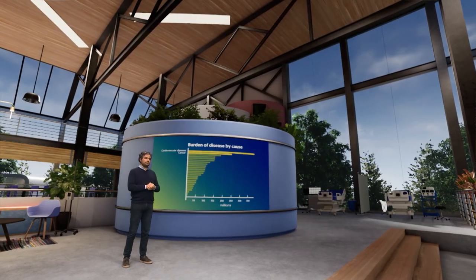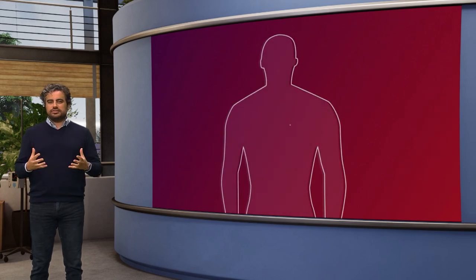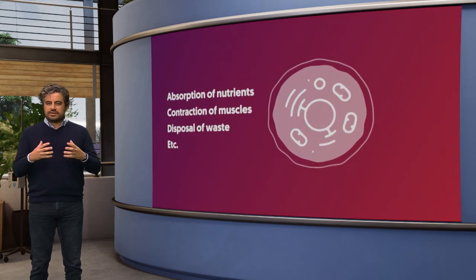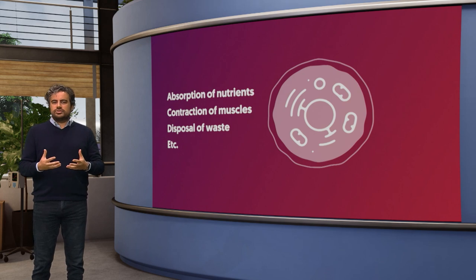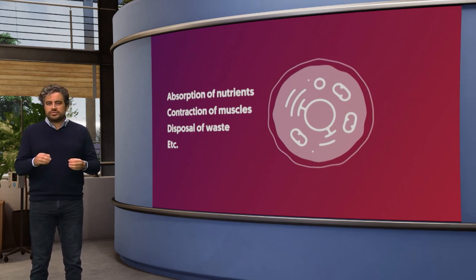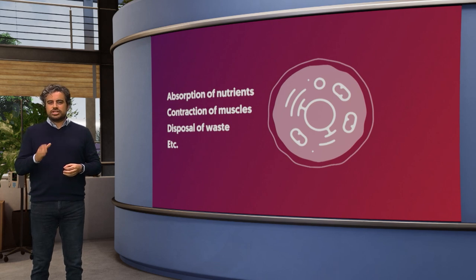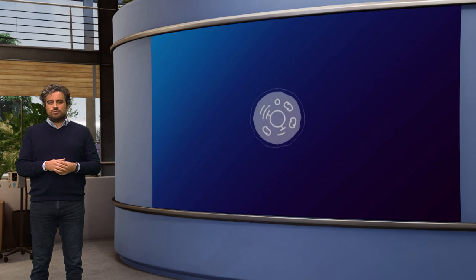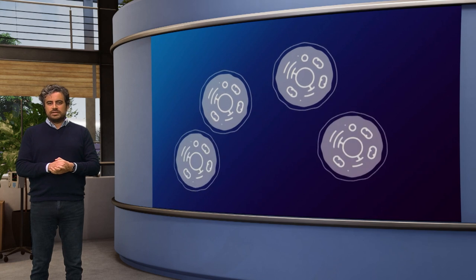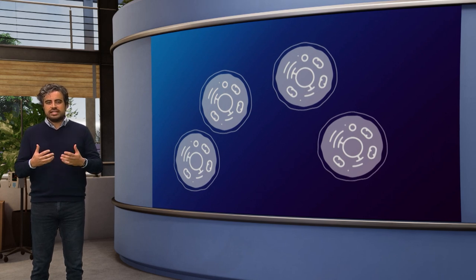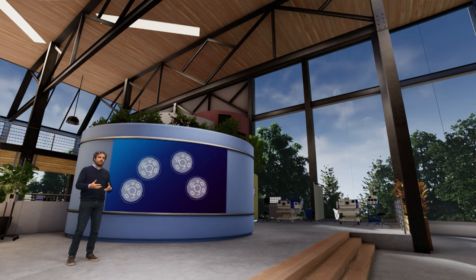Cancer arises from the misbehavior of our own cells. But before we understand how cells misbehave, let's take a brief look at how they usually do. Our bodies are made up of trillions of cells. Together they form a structure and have very well-defined and specialized functions that include the absorption of nutrients, contraction of muscles, or disposal of waste products. They also contain our DNA, the molecule that carries the genetic information across generations. One very important characteristic of cells is that they can make copies of themselves through cell division, which is important to renew or repair tissues — we can see evidence of this when a wound is repaired or when hair grows.